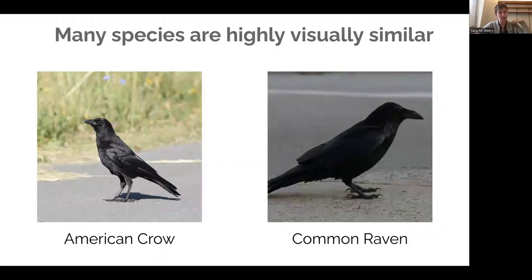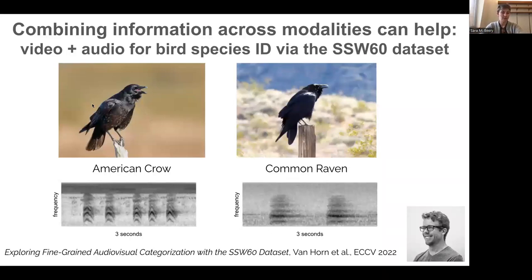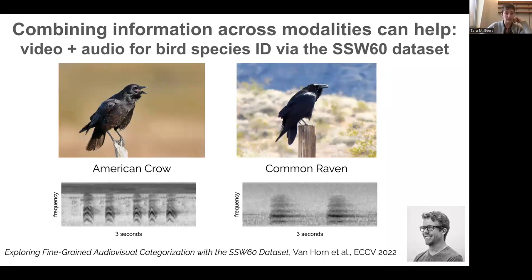Adding another level of complexity: not only do we have things that are rarely seen and distribution shift, we also have what the computer vision literature calls fine-grained categories — basically stuff that looks the same. American crows and common ravens look very, very similar, and it can be really difficult even for humans to accurately identify them unless they're true experts. But one interesting line of work by colleague Grant Van Horn looks at the value of combining information across data modalities to help disambiguate difficult computer vision tasks — the American crow and common raven might look very similar but sound very different, and other species show the opposite pattern.